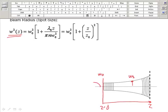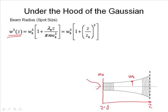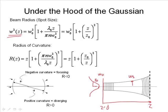The solution of our equation is going to look like a Gaussian. This point, which happens to be the 1-over-e amplitude, is defined to be W-naught, and that increases as we go along the beam. The radius of curvature is essentially the radius R of a sphere, or how much the beam front is curved.